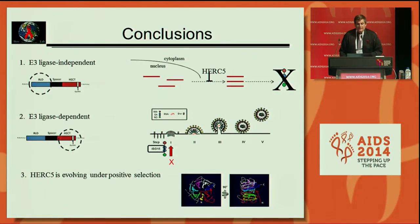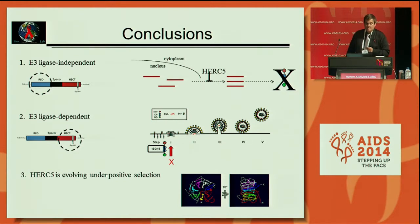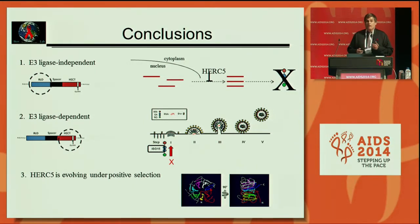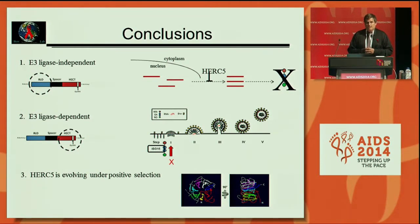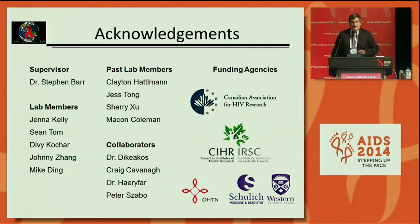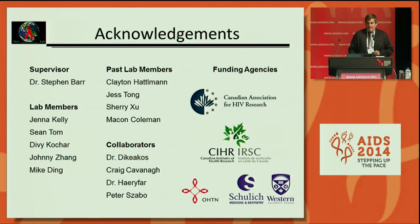In conclusion, we've identified that HERC5 restricts HIV by two mechanisms: the RLD domain inhibits export of REV-dependent RNA, and the E3 ligase-dependent mechanism modifies GAG with ISG15. HERC5 is also evolving under positive selection. I'd like to thank my supervisor Dr. Stephen Barr, my past and current lab members, collaborators, and the funding agencies.